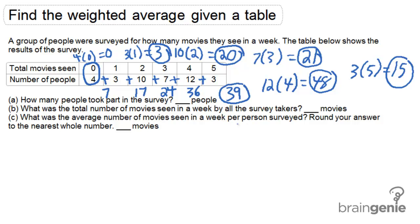Okay, I'm not going to circle the zero because it's not going to add anything to the total. So three plus 20, plus 21, plus 48, plus 15. This can be done best by adding vertically all at once. Three plus zero is three, plus one is four, plus eight is 12, plus five is 17. So we're going to carry the one. One plus two is three, plus two is five, plus four is nine, plus one is ten. So for part B, our answer is 107 total movies.